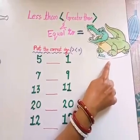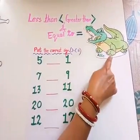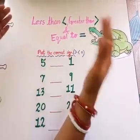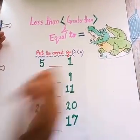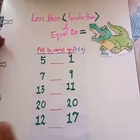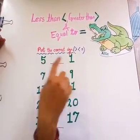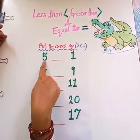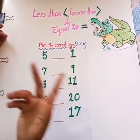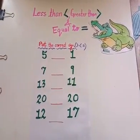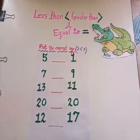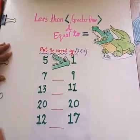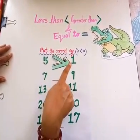This is Ellie, the alligator. This Ellie loves to eat the biggest number. Now tell me children, which number will she eat in both of the numbers? Number 1 or number 5? Which number is biggest? That's right, Ellie will eat number 5, because number 5 is bigger than number 1.